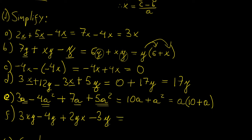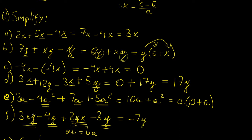For this last simplification, we have y terms and xy terms. Note that xy and yx are the same because the order of products doesn't affect the result. We have minus 4y minus 3y, which becomes minus 7y, and 3xy plus 2xy gives plus 5xy. We can factor out y as a common factor. To make it look nicer, we swap the terms around, giving y times (5x minus 7).